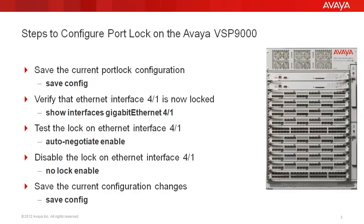We'll test the lock on slot 4 port 1 and view the system error message when we attempt to configure the interface. Next, we'll disable the lock on the Ethernet interface using the no lock enable command. And finally, we'll save the current configuration changes again with the save config command.